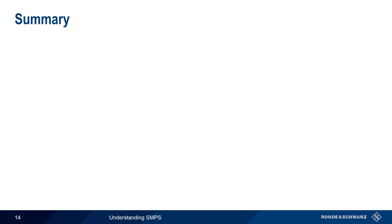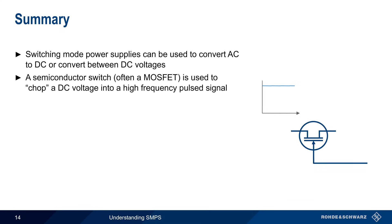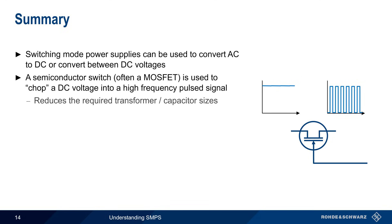Let's end with a brief summary. Switching mode power supplies are commonly used to convert AC to DC, or to convert between different DC voltages. They're called switching mode power supplies because a semiconductor switch, typically a MOSFET, is used to chop a DC voltage into a high frequency pulse signal. This has two main advantages: first, higher frequencies reduce the required size of both the transformer and capacitors, especially compared to linear power supplies.